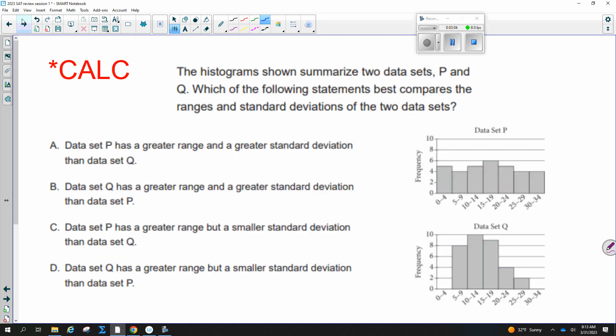The histogram shown summarizes two data sets, P and Q. So here we have P, here we have Q. Which of the following statements best compares the ranges and standard deviations of the two data sets? So what we have is a list of numbers and then the frequency that they occur. And so we're looking for the range. Which one has the greater range? And then the standard deviation. So range is your low to high.